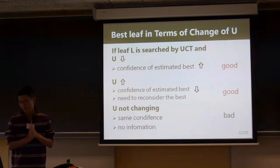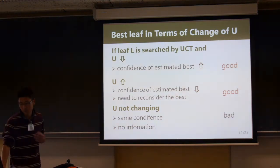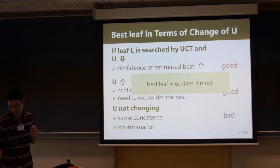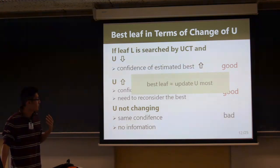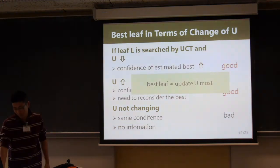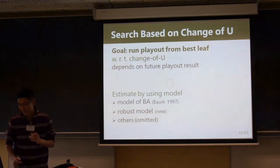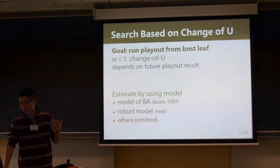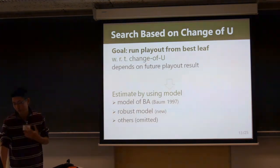However, if U-value doesn't change, the algorithm gets no information, which is not preferable. So the best leaf for search is a leaf that affects U-value the most. Therefore, our goal is to choose the leaf with the greatest estimated change of U-value after the play.